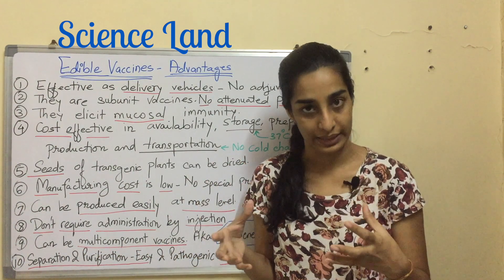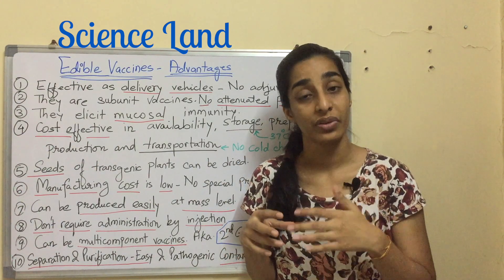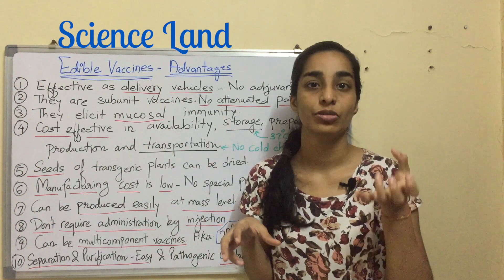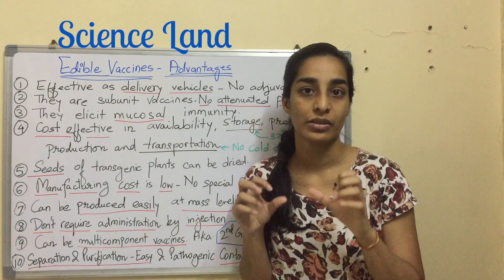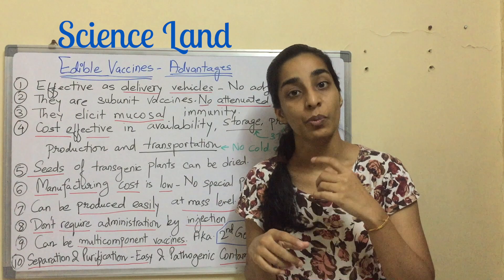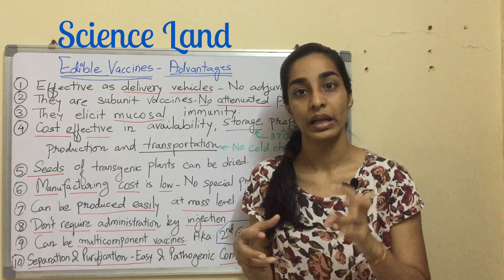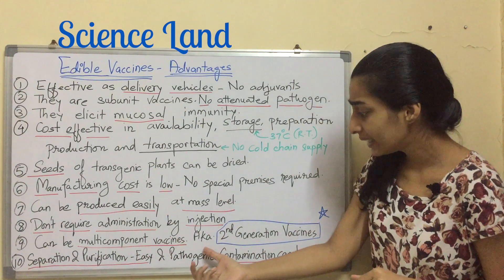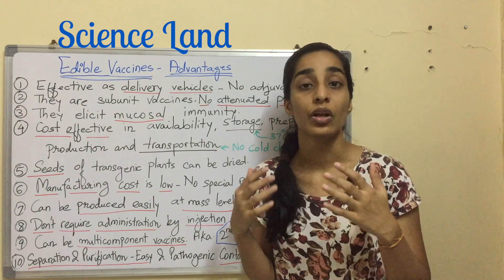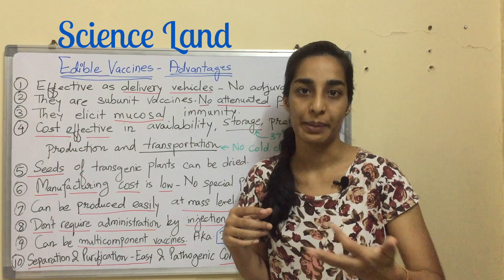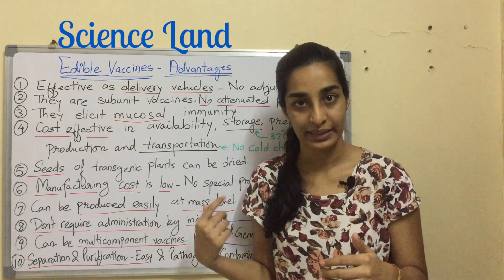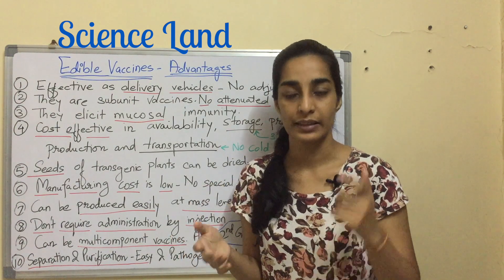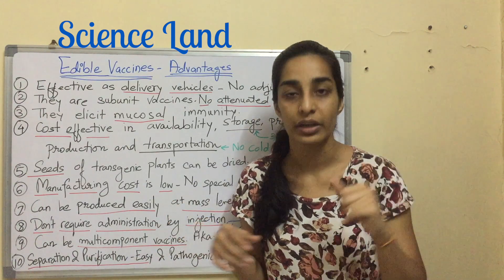Next advantage: they can be multi-component vaccines, meaning they contain more than one antigen. For example, you could take an antigen gene from tetanus and an antigen gene from cholera and incorporate both into the same plant, producing a protein with dual components — two antigens in one vaccine. These are also known as second generation vaccines, because normal first generation vaccines have one antigen approaching the M cells one at a time, while second generation vaccines have two antigens approaching the M cells simultaneously.